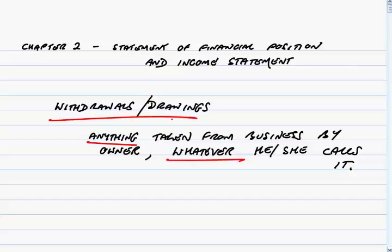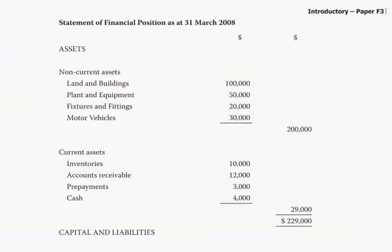Let's go back to the notes. In the example in the last section, we effectively produced a statement of financial position and an income statement. However, if you turn to page 9, let's have a look at the proper, pretty layout of, first of all, a statement of financial position. Here's what you've got on page 9 — it's just what you might call a pro forma. It's only an example; other things could appear, and other things will appear in later chapters. But this is just the basic layout.